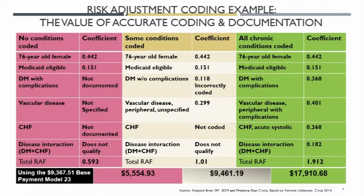On the tan scenario, we coded the diabetes incorrectly — bad thing — so that dropped down the weight, the coefficient we got for that. The vascular disease is still unspecified, but it still has a weight so we'll take it. CHF wasn't coded. So we now have a RAF of 1.01, and our annual rate would have been $9,461 — a nice bump in reimbursement. Divide that by 12 and you'll know what you'd get per month.